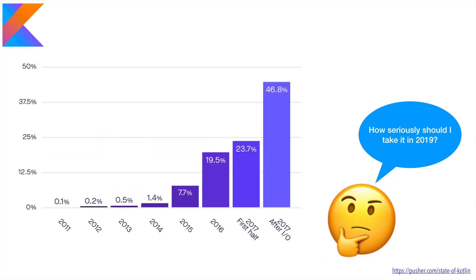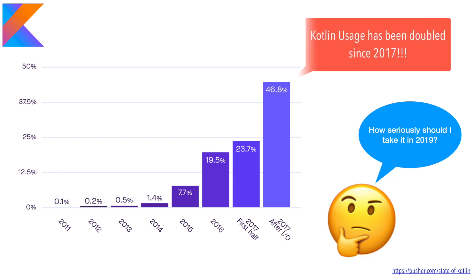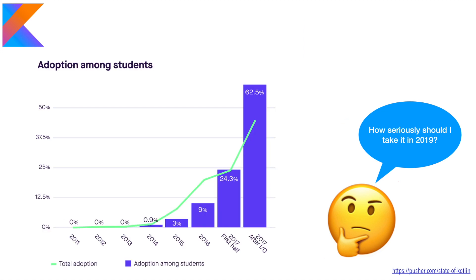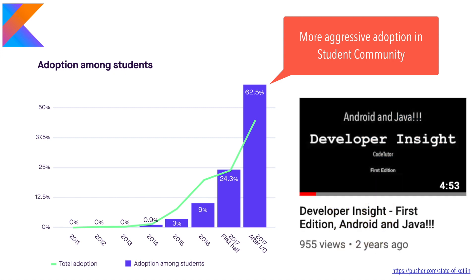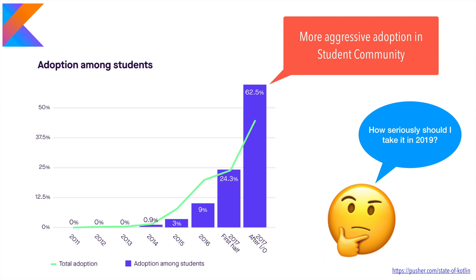After Google announced the introduction of Kotlin support in 2017, Kotlin usage has doubled since then. The adoption among the student community has also increased. If you watch my other video where I explained how Java ended up becoming the programming language for Android application development, it starts making sense why adoption of a programming language among the student community can play a major role in the success of a programming language. So it's no wonder this is also helping the growth of Kotlin.